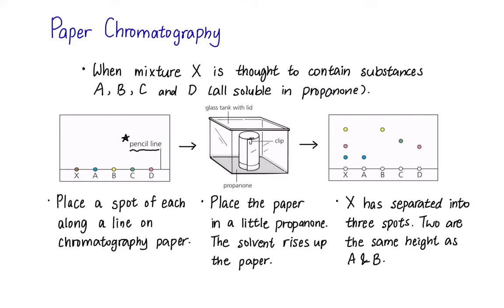From the diagram here, we can see that X has separated into three spots and two of them are of same height as A and B, indicating that it contains A and B but not C and D.